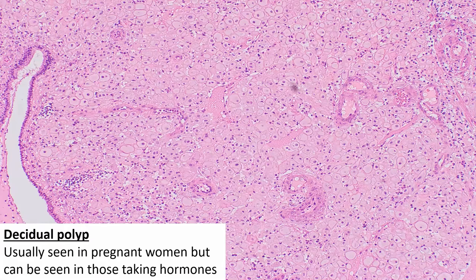During pregnancy and rarely in women using exogenous hormones, these polyps can show decidual change. The stroma gets decidualized, meaning the stromal cells have abundant eosinophilic cytoplasm and very distinct clear cell membranes.